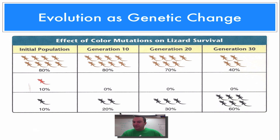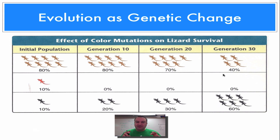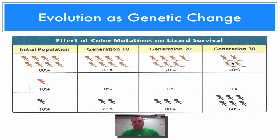Maybe due to some environmental factor, the habitat is changing color — becoming a little bit darker — and as the habitat changes color, over these generations you're seeing more and more of the black and less and less of the brown. This population of lizards is evolving because they're having a change in gene frequency. The frequency of the black allele is increasing, the frequency of the brown allele is decreasing, and the frequency of the red allele has essentially been removed because it offers no fitness. The black ones are becoming more fit, the brown ones less fit — that's evolution on a genetic scale.